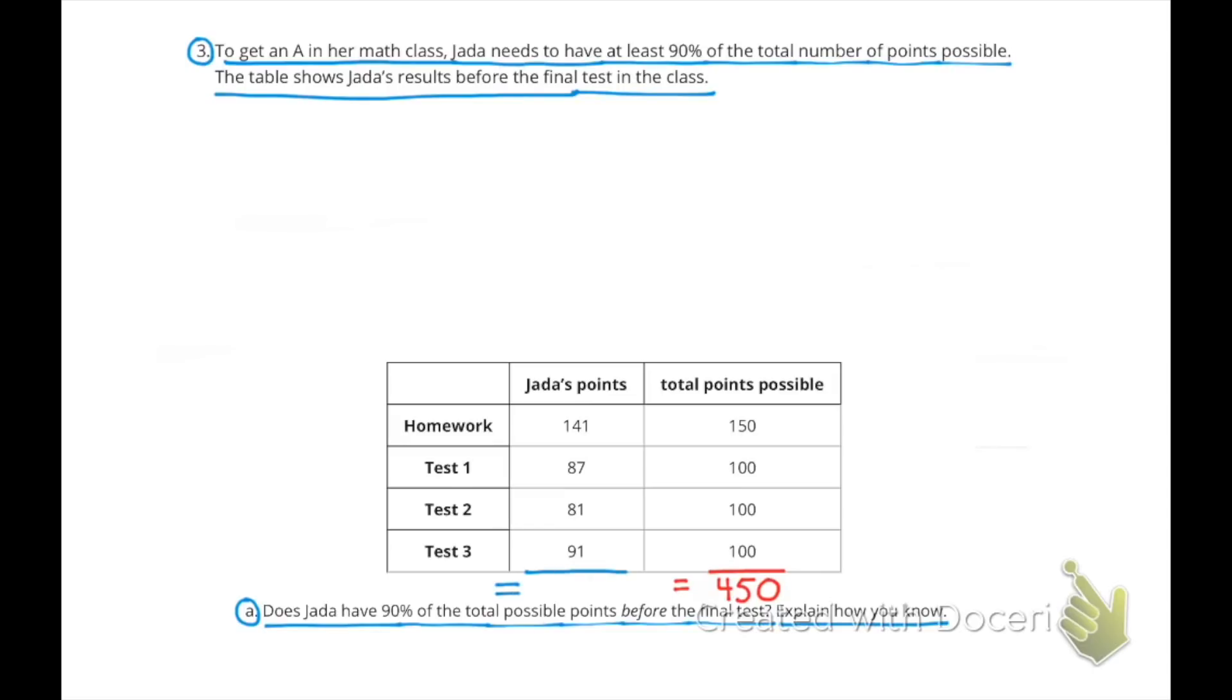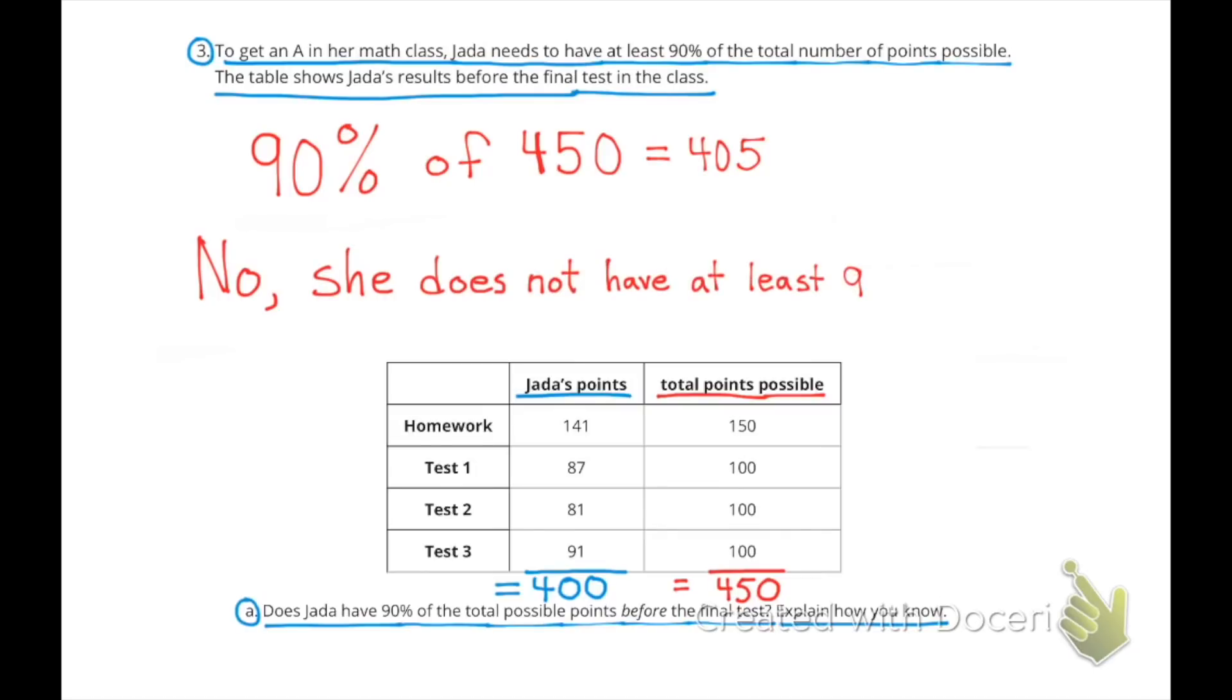90% of 450 points is 405 points. And Jada only has a total of 400 points. So no, she does not have at least 90%.